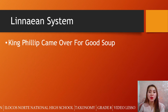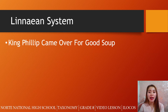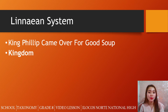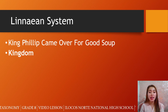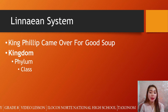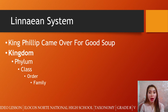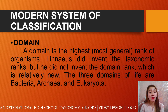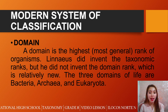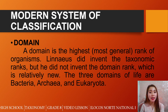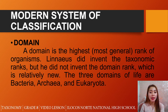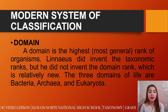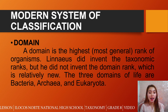According to the Linnaean system, having the levels of classification — the mnemonic is: King Philip Came Over For Good Soup. According to Carolus Linnaeus: K stands for kingdom, P for phylum, C for class, O for order, F for family, G for genus, S for species. But for the modern system of classification, it includes the domain, and the domain is the highest rank of organisms. Linnaeus did not invent the domain rank, which is relatively new. The three domains of life are Bacteria, Archaea, and Eukaryota.